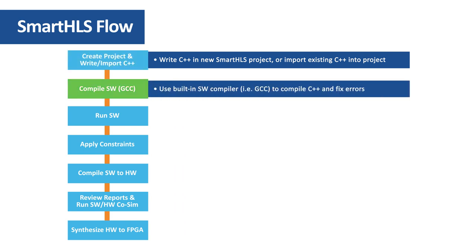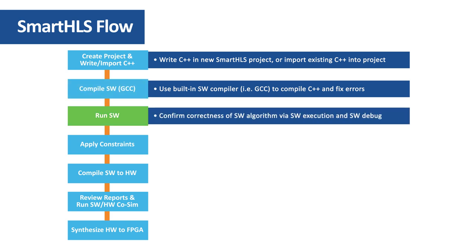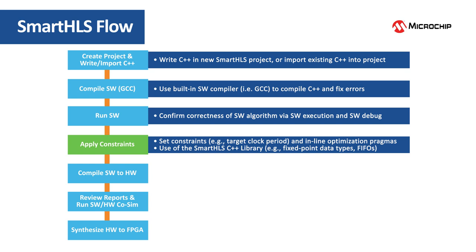Next is to compile the C++ and fix any errors. Now run the C++ software to confirm functionality and to make any corrections. Optimizations can be applied using constraints and pragmas. In addition, the use of a Smart HLS C++ library can be leveraged to further optimize the design.